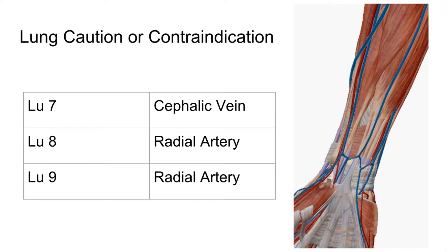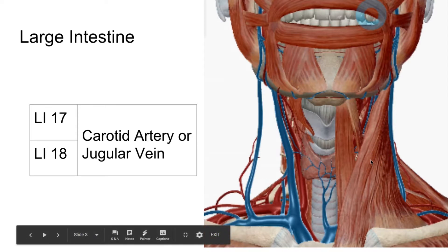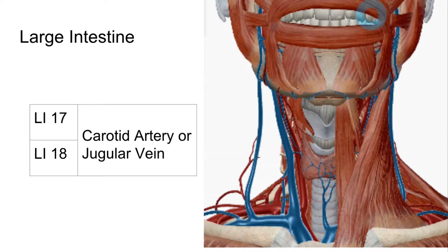From here on I'm just going to be talking about locations and what arteries, veins, or organs may be punctured. For the large intestine channel, LI17 and LI18 both have caution for the carotid artery or jugular vein. LI17 is on the side of the neck, 1 cun inferior to LI18, on the posterior border of the sternocleidomastoid. LI18 is level with the tip of the laryngeal prominence, between the sternal and clavicular heads of the sternocleidomastoid. Deep penetration here could hit the carotid artery or jugular vein.